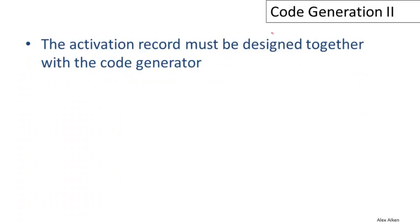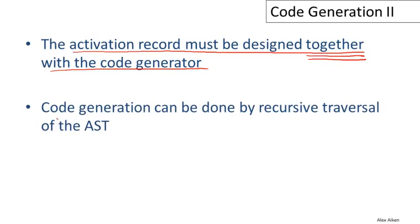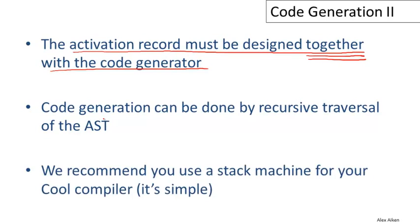To summarize the main points: the activation record must be designed together with the code generation — you can't design the AR without thinking about what code you'll generate, and vice versa. Code generation can be done by a recursive traversal of the abstract syntax tree, just like type checking, allowing you to think about one case at a time. For a course project, using a stack machine is recommended: it's the simplest discipline and gives a nice framework for breaking the problem into manageable pieces, making it a great way to learn about writing compilers.